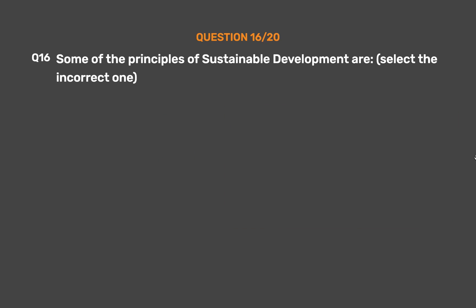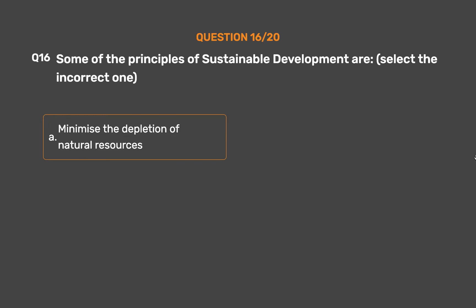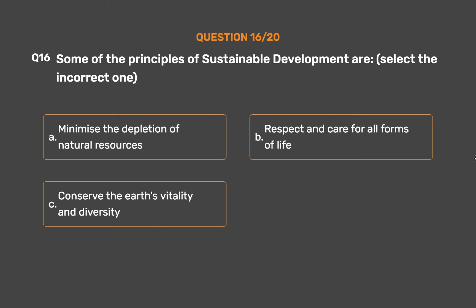Question number 16. Some of the principles of sustainable development — select the incorrect one. Option A: Minimize the depletion of natural resources. Option B: Respect and care for all forms of life. Option C: Conserve the earth's vitality and diversity. Option D: Government should only take care.